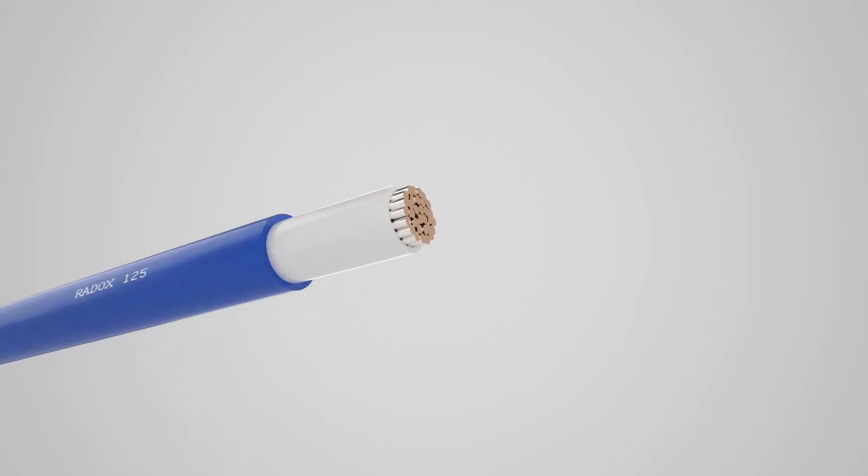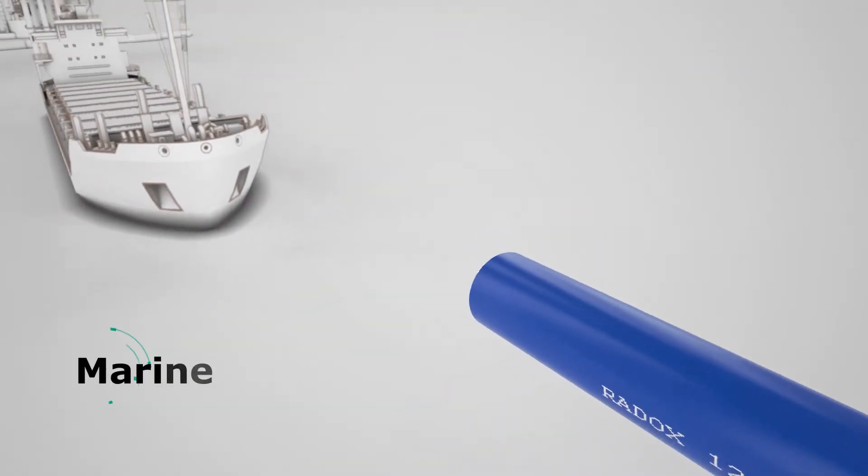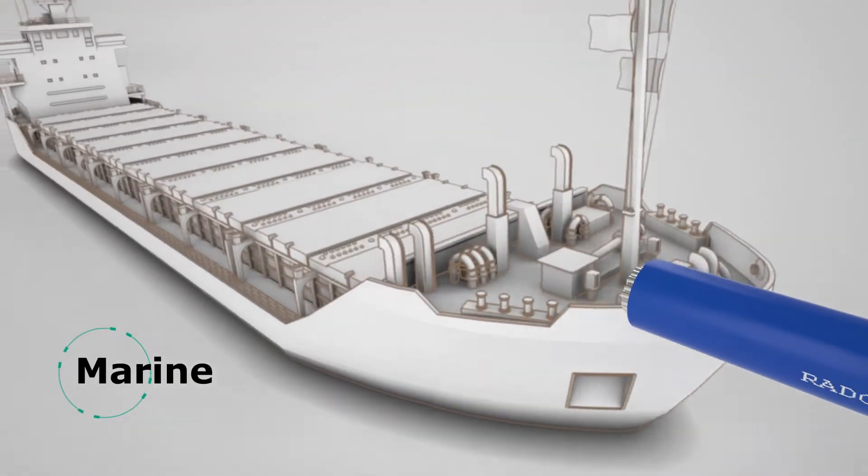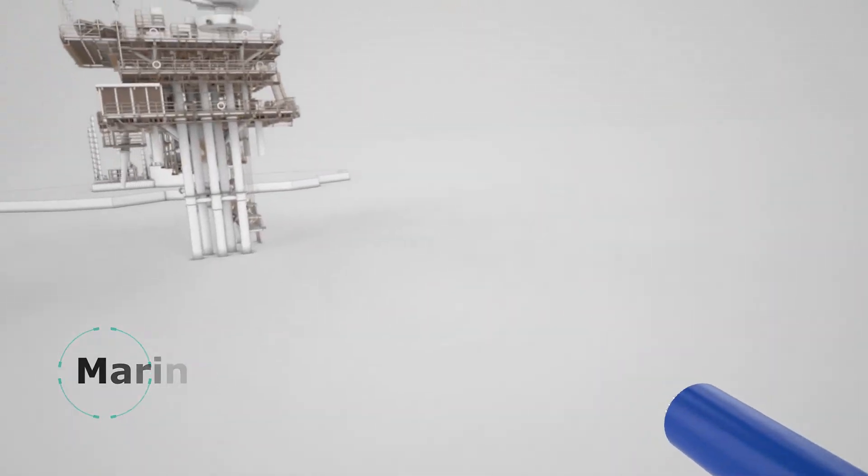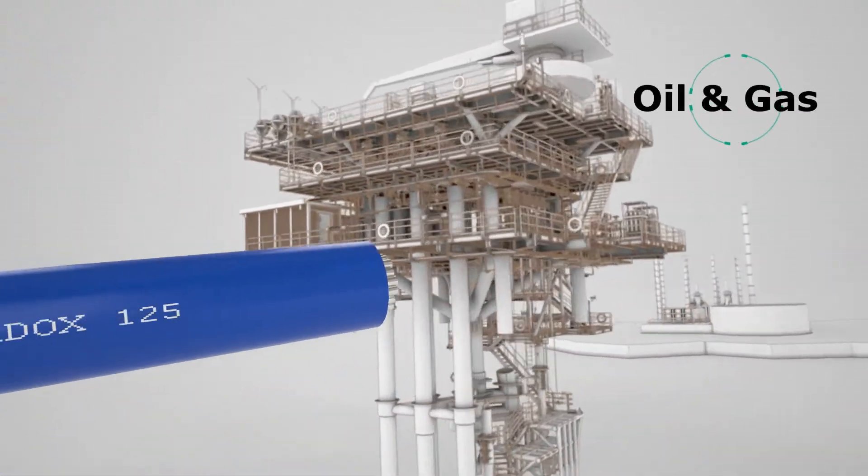The Huber & Sooner Redox 125 is a highly flexible cable ideal for industrial applications in harsh environments, including marine, offshore oil and gas, refineries, petrochemical, chemical, and power plants.